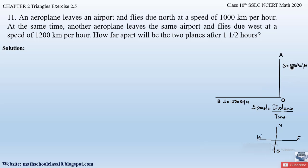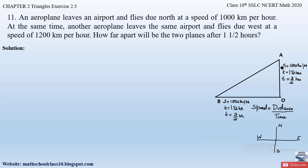We have to find out how far apart the two planes will be after one and a half hours. Converting one and a half into a fraction: two into one is two, plus one is three, so that is three by two hours. Similarly, the second aeroplane moving west also has a time of one and a half hours, that is three by two hours. We need to calculate the shortest distance between the two aeroplanes.